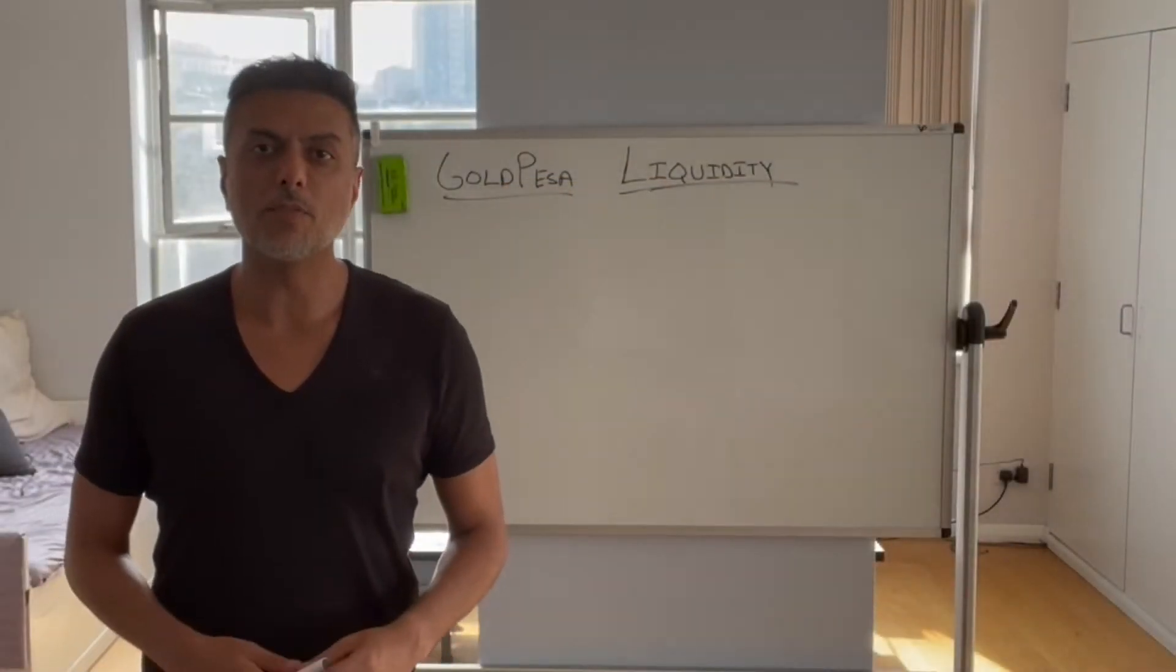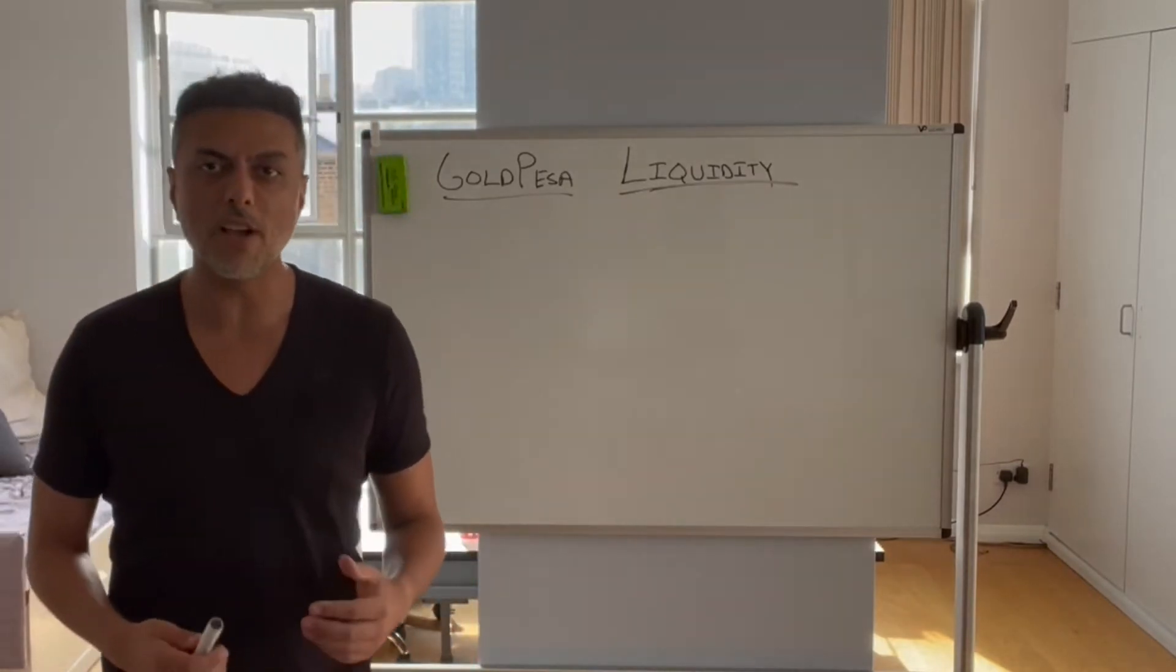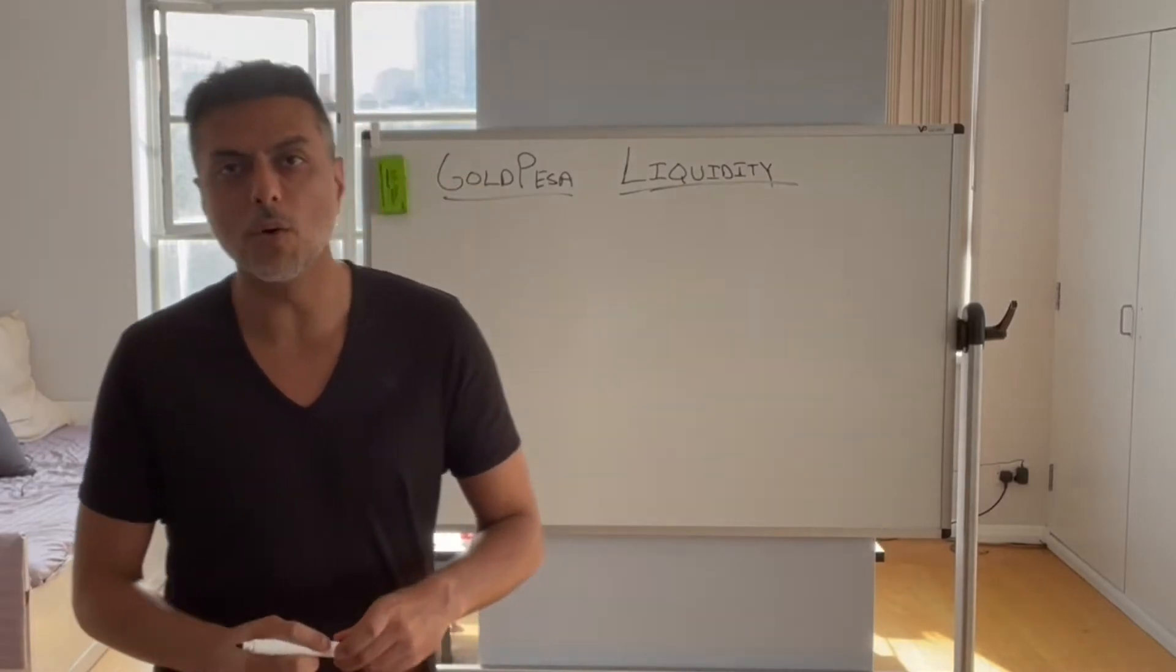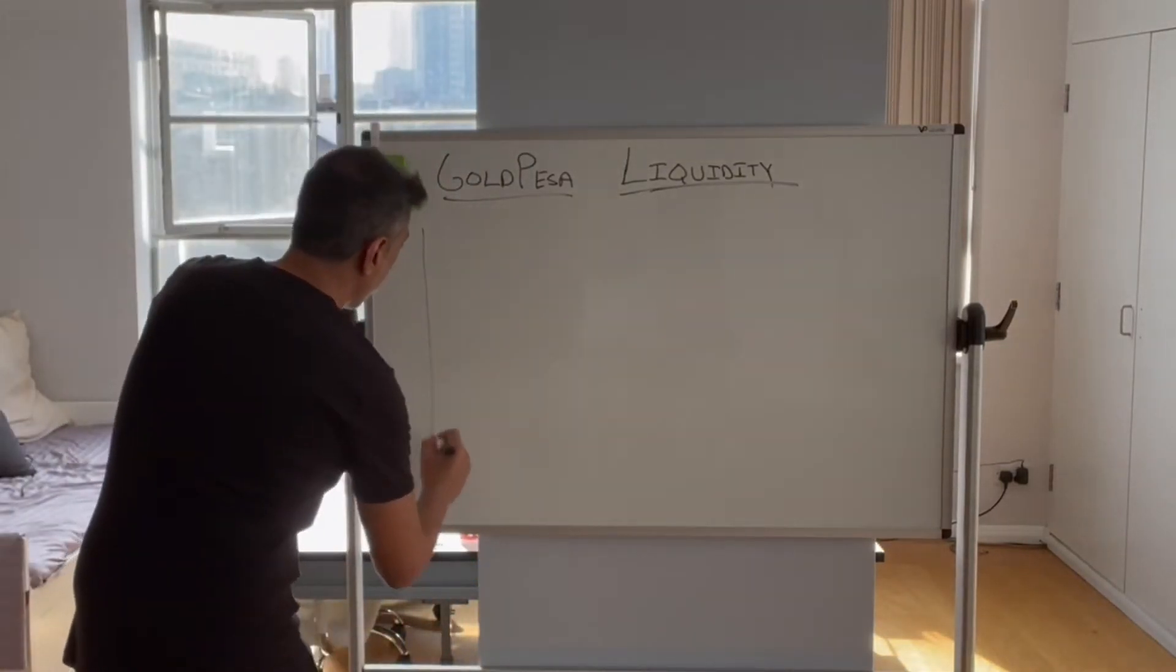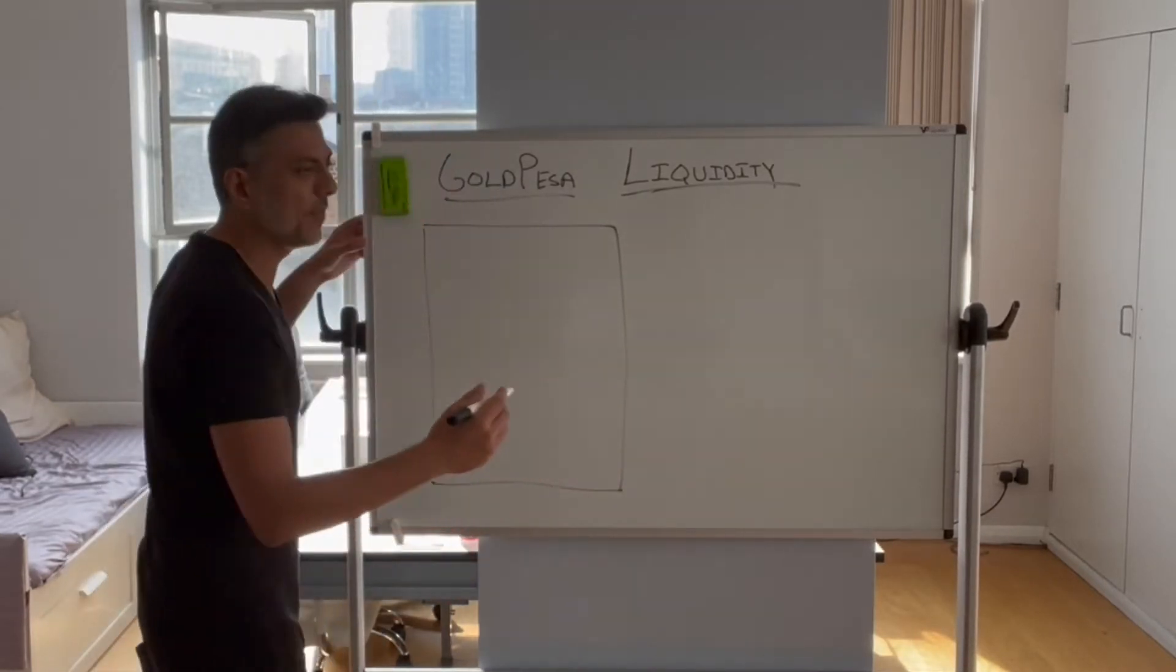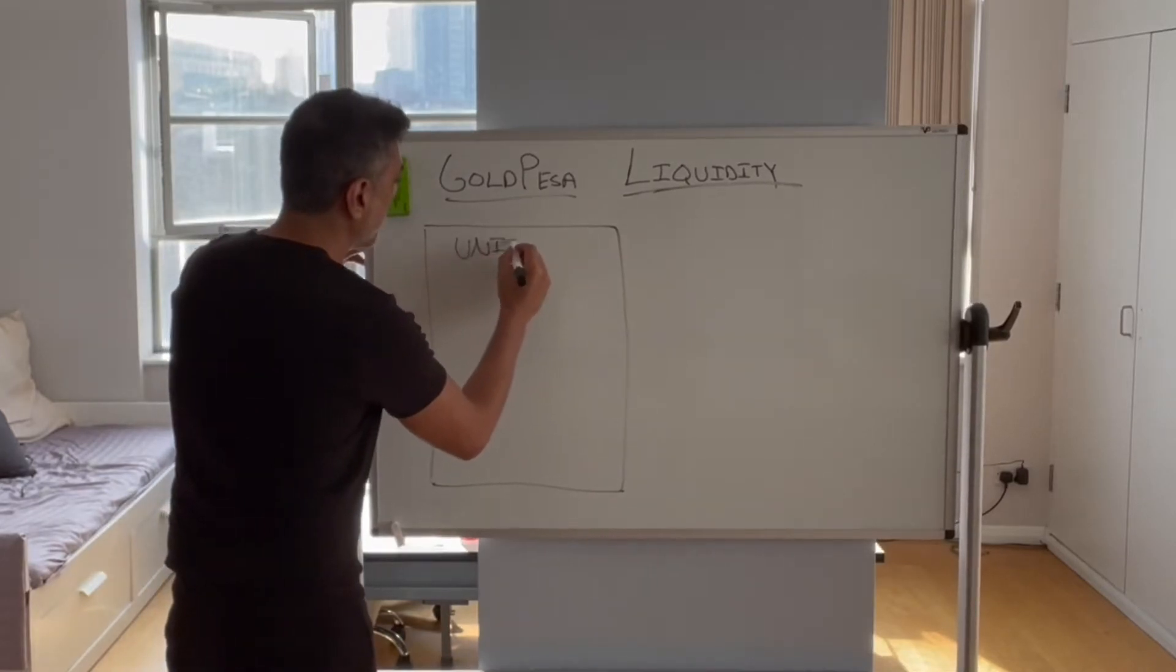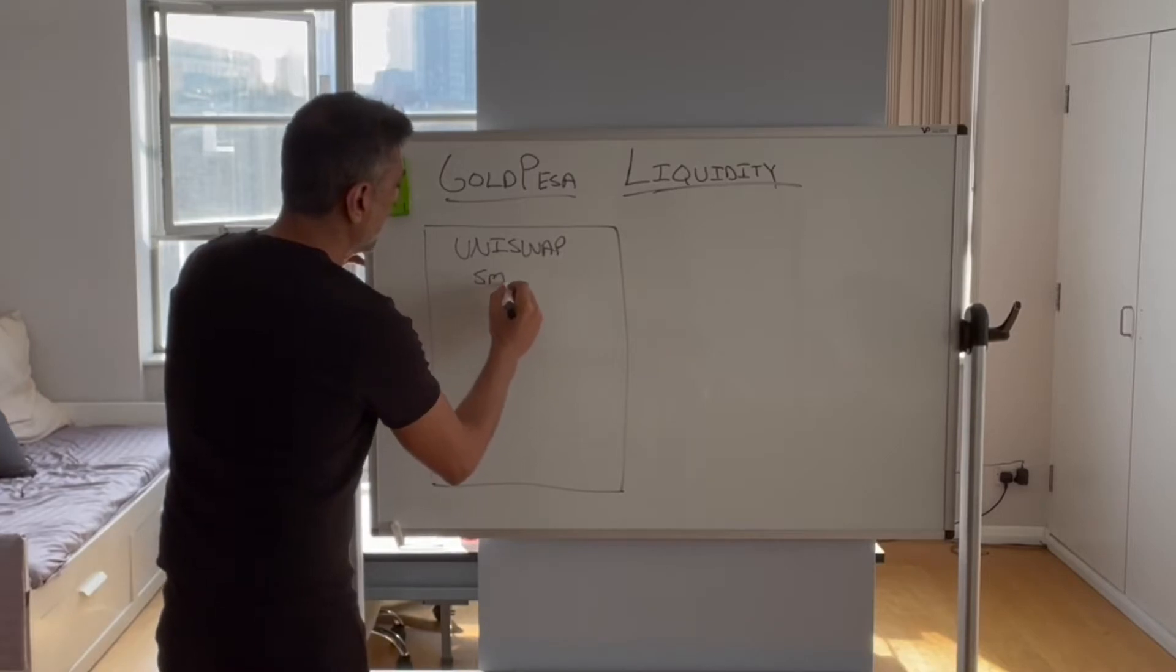The constant product formula is the math that Uniswap uses to price a token pair. So if we go back to our Forex Bureau analogy, we will draw the bureau, but instead of a Forex Bureau, it is now a Uniswap smart contract.